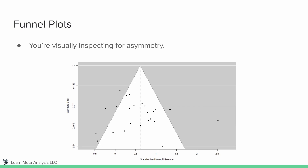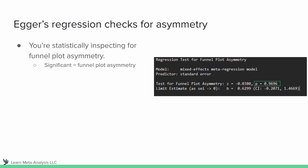When we look at this plot, we can say it's relatively symmetrical — but that's the best we can do with a visual inspection. Because of this limitation, there are also ways to statistically inspect for funnel plot asymmetry. We can use Egger's regression, and in the output from metafor in R, we get a p-value. If it is statistically significant — less than p = 0.05 — then we see significant evidence of funnel plot asymmetry. In this case, we don't have that, so we can say the funnel plot is relatively symmetrical.